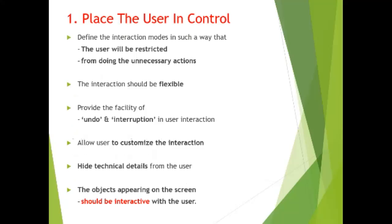The first golden rule is to place the user in control. Define the interaction modes in such a way that the user will be restricted from doing unnecessary actions. The interaction should be flexible. Provide the facility of undo and interruption in user interaction. Allow the user to customize the interaction. Hide technical details from the user. The objects appearing on the screen should be interactive with the user.